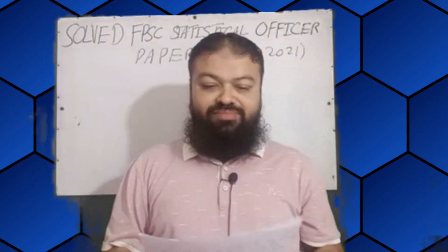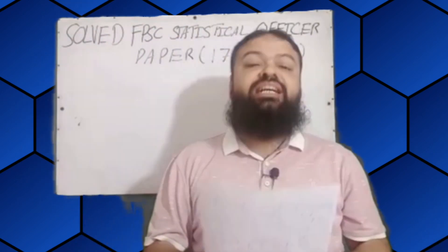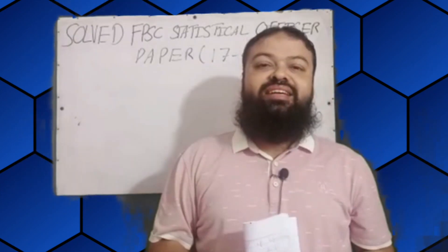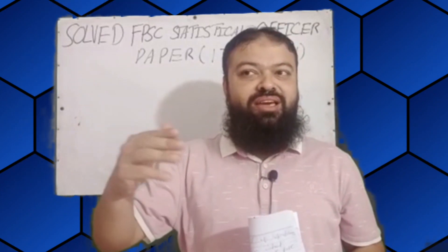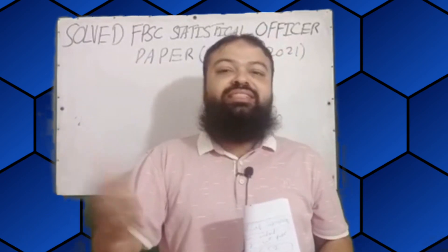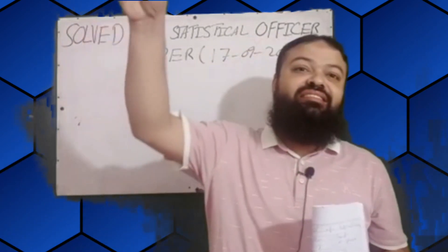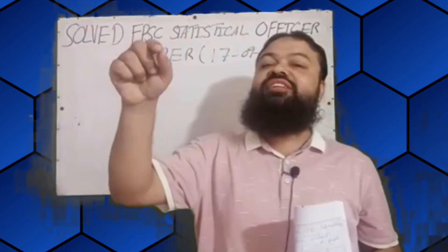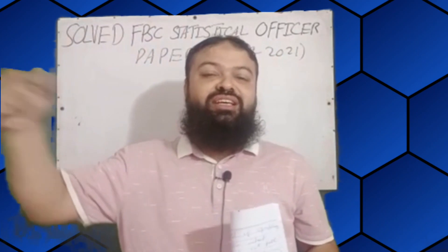Question number two: which average is less affected by the outliers? The answer is median. If you have extreme or abnormal values in your data, we arrange the data in ascending order and take the central value. That is why the median is not affected much compared to other averages.